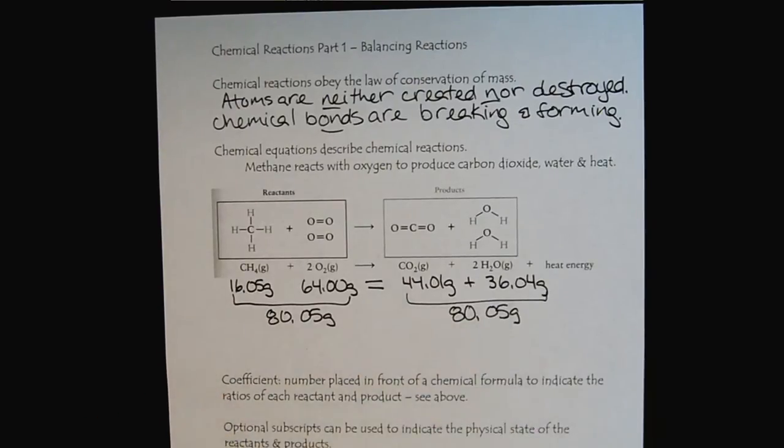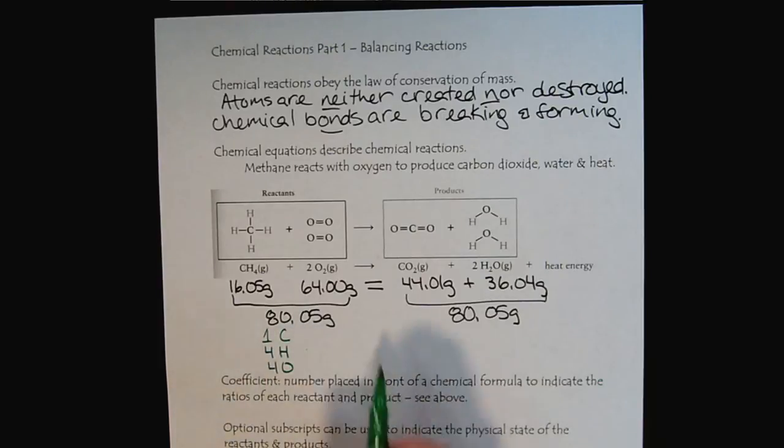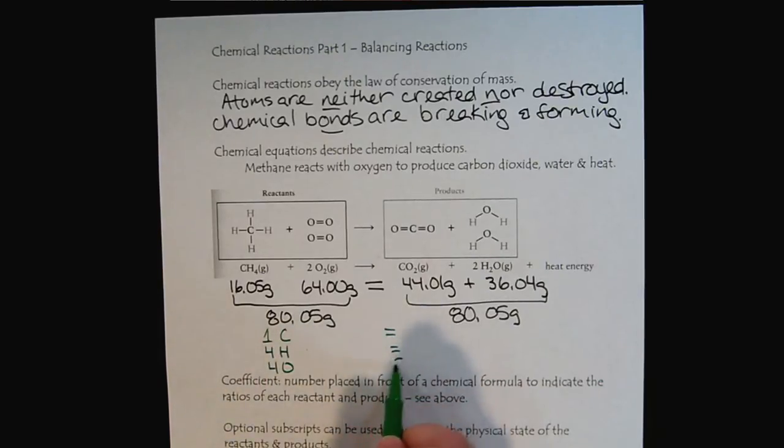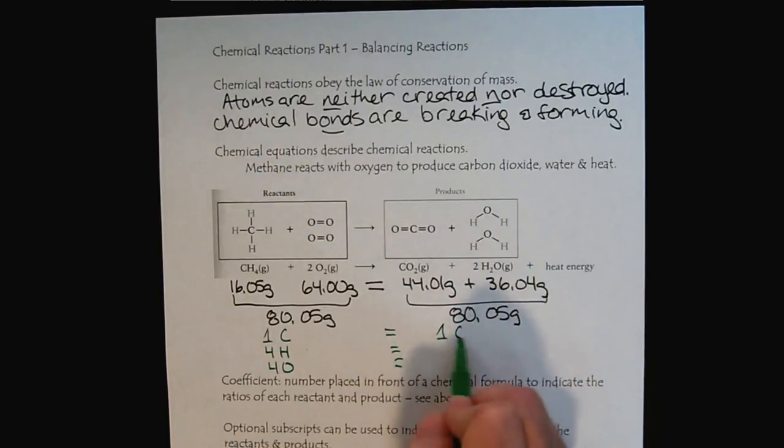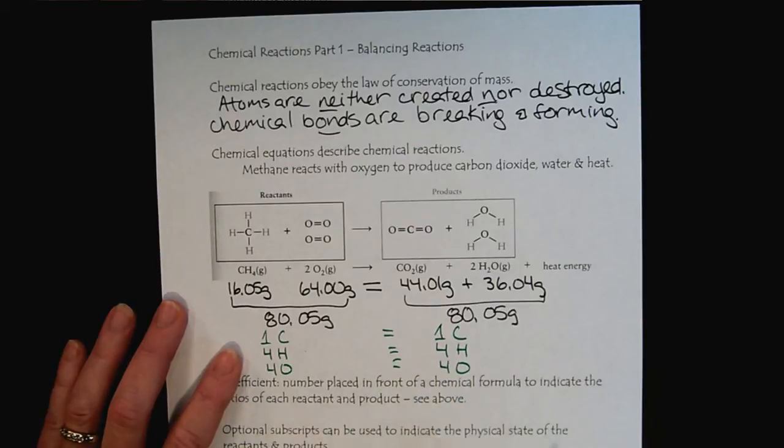We can also look at it from the point of the atoms. On the left, we have one carbon, four hydrogens, and four oxygens. And on the right, we have one carbon, four hydrogens, and four oxygens. So we have also maintained the same number of atoms. That's what we talk about, that atoms are not created nor destroyed.